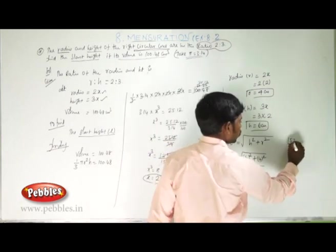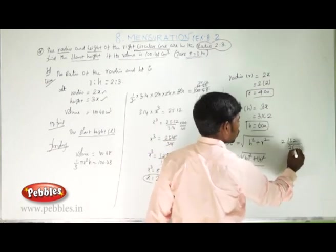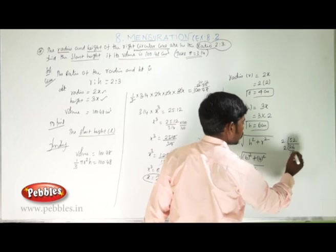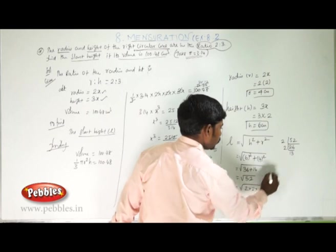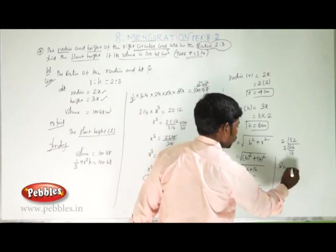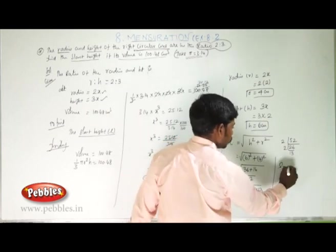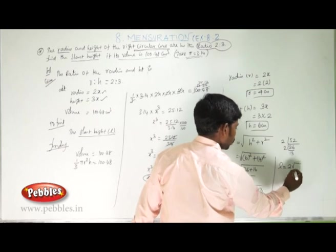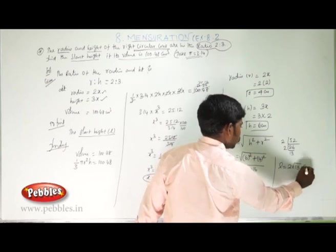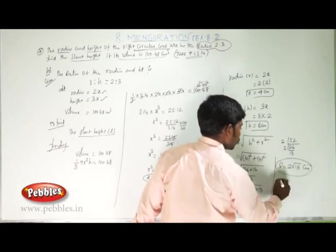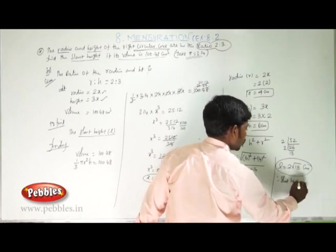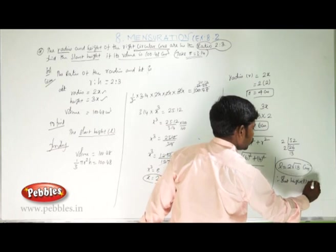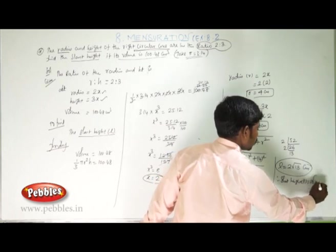52 can be written as 2 × 26, which is 2 × 2 × 13. So √52 = √(2 × 2 × 13) = 2√13. Therefore, the slant height L = 2√13 centimeter.